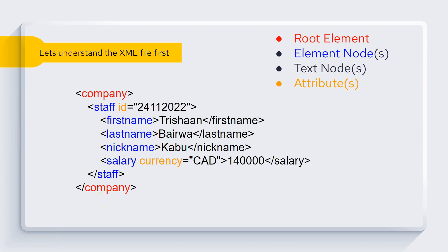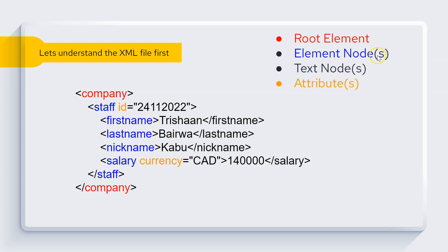Before we jump to the coding section, I just want to explain the components or elements an XML file can have. I have already put the color coding here. The very first tag is known as the root element of the XML file — here 'company' is the root element. The next component is element node. Whatever you see in blue text — star, first name, last name, nickname, salary — are known as element nodes.